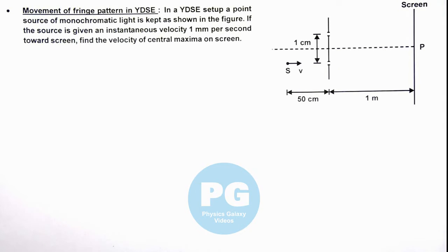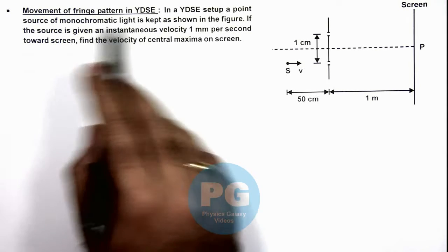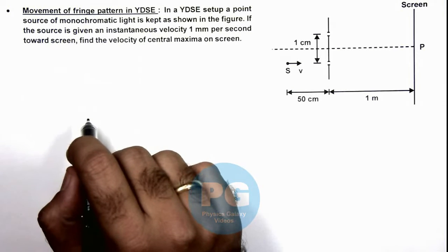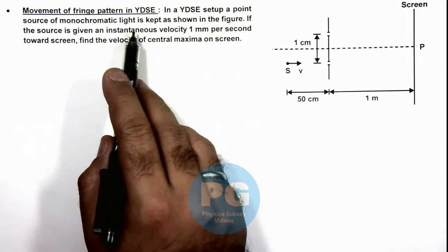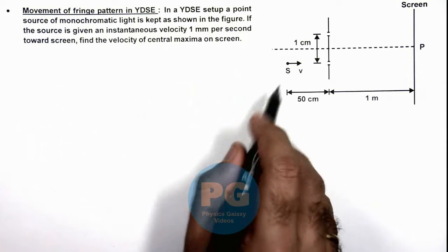In this illustration, we'll discuss the movement of fringe pattern in YDSE. Here we are given that in a YDSE setup, a point source of monochromatic light is kept as shown in the figure.